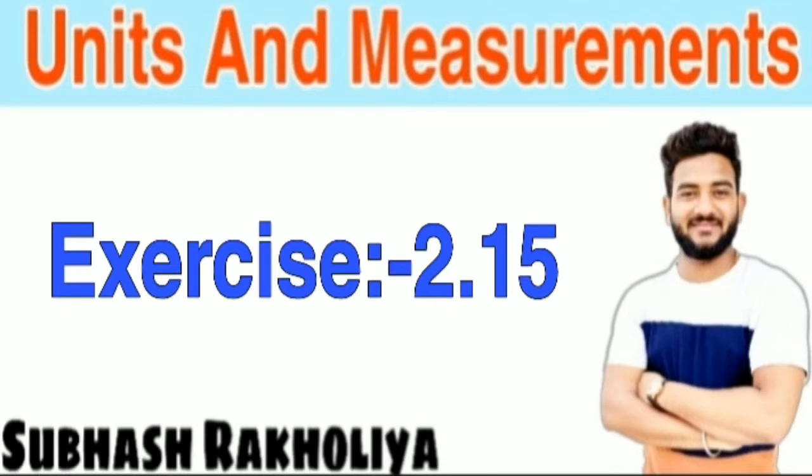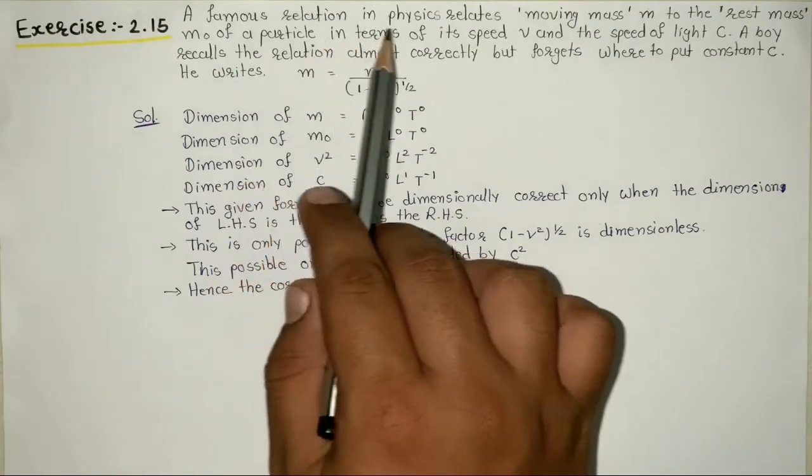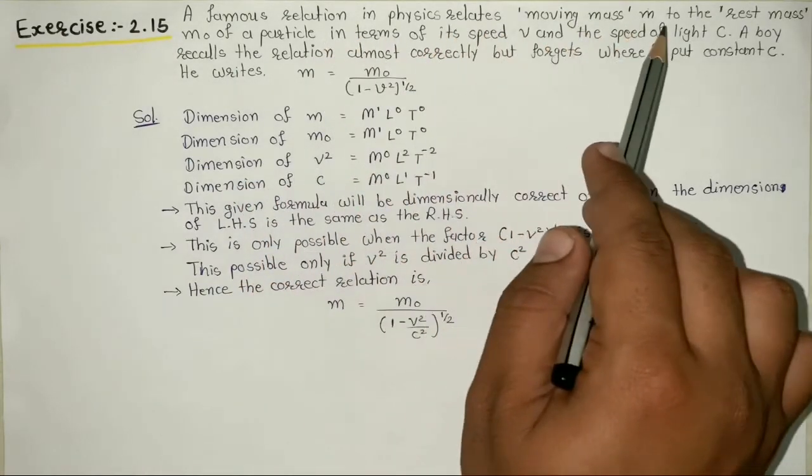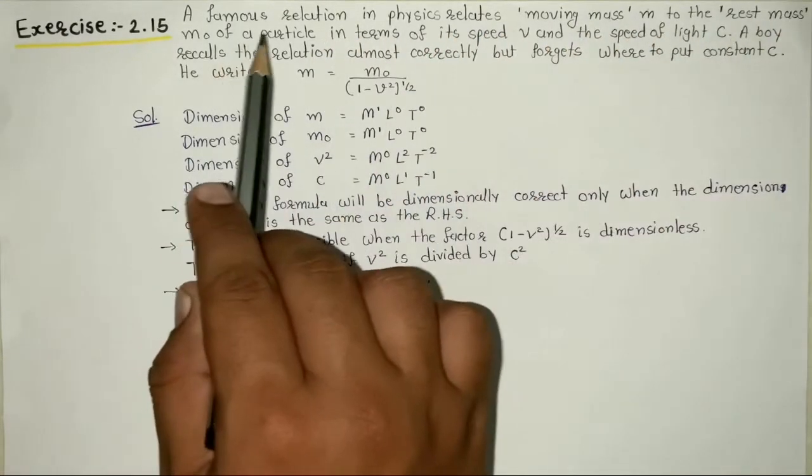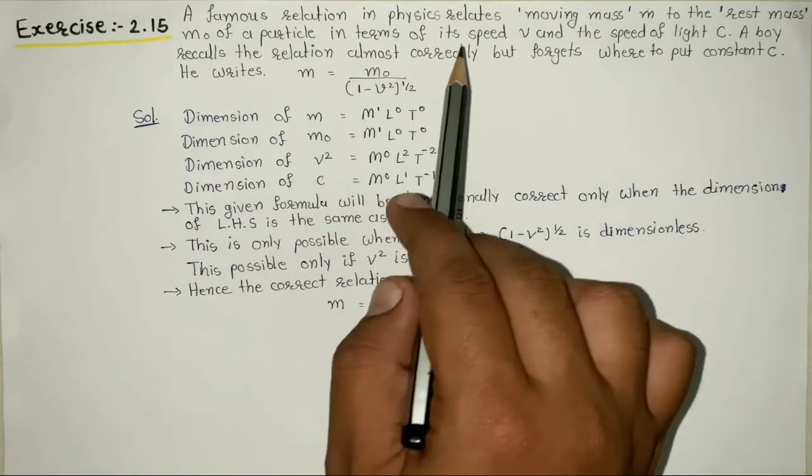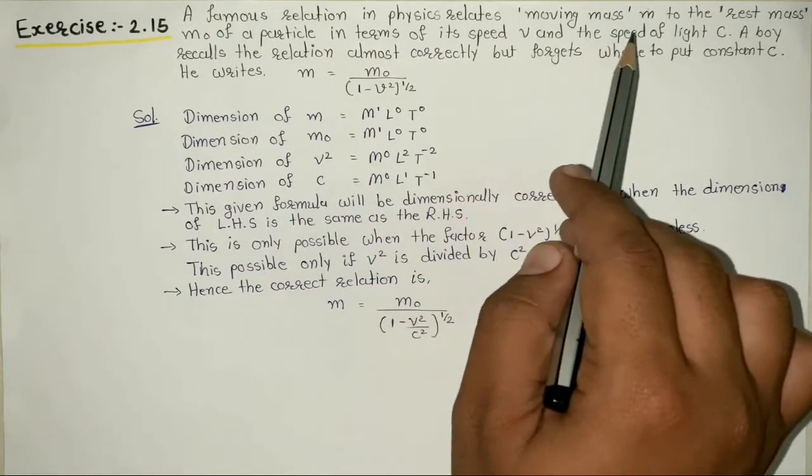Exercise question number 2.15. The question is: a famous relation in physics relates moving mass m to the rest mass m0 of a particle in terms of its speed v and the speed of light c.